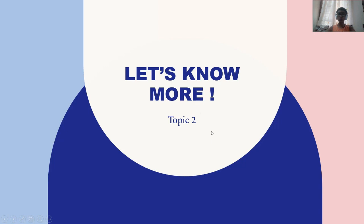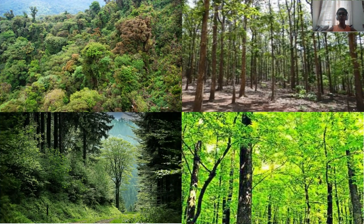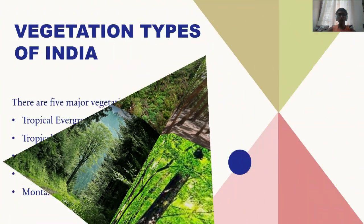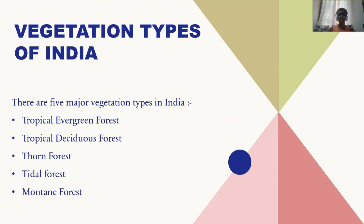Let's Know More, Episode 2. So we're looking at this picture — what comes to your mind? I think you have already guessed what the video is about. It's about vegetation types of India. You might have thought it's about forests, and you were very close. There are five major vegetation types in India.